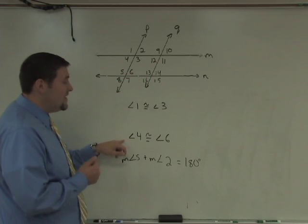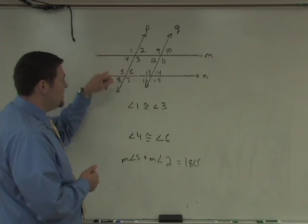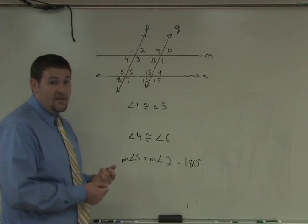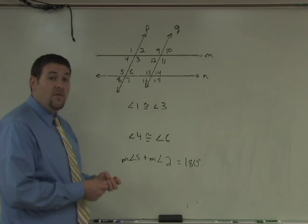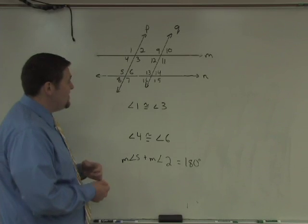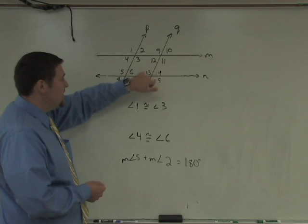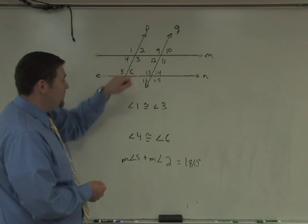So from this information, we can conclude that M is parallel to N. In fact, any set of alternate interior angles that are congruent will show that the lines are parallel. We can say the same if twelve and fourteen were congruent, eleven and thirteen were congruent, or three and five were congruent.